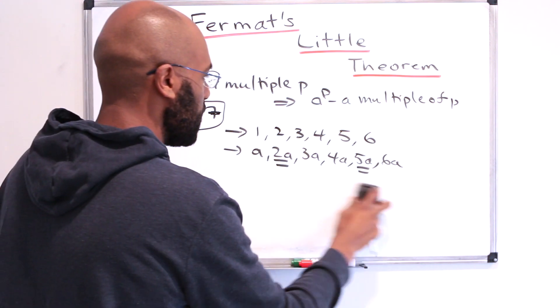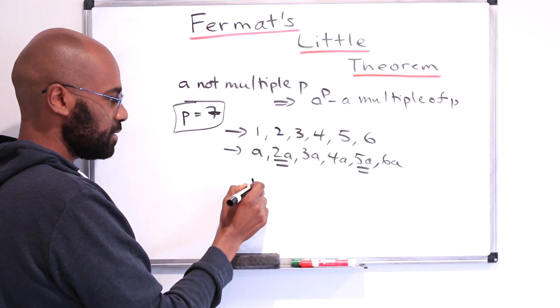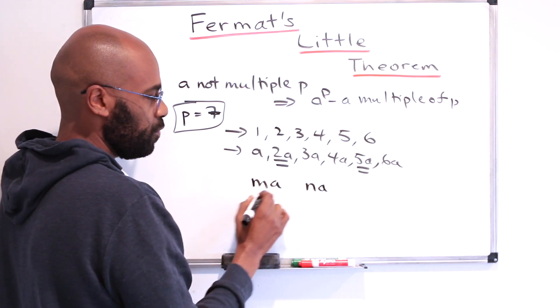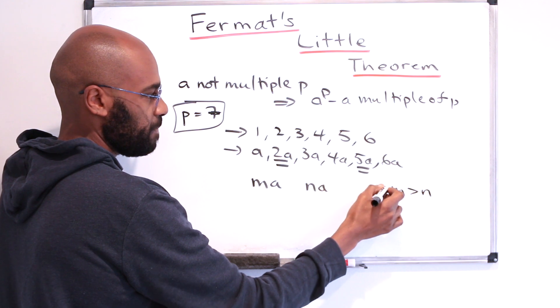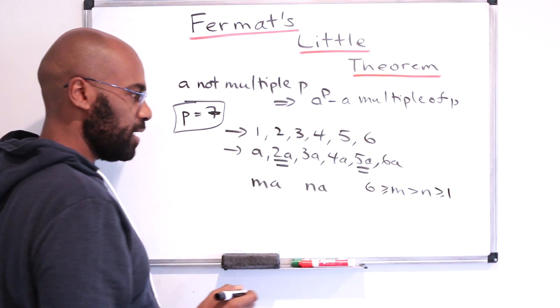So this is going to be true in general. Any pair of these we can represent as ma and na, where we can make one, without loss of generality, greater than the other, and they're all between 1 and 6.